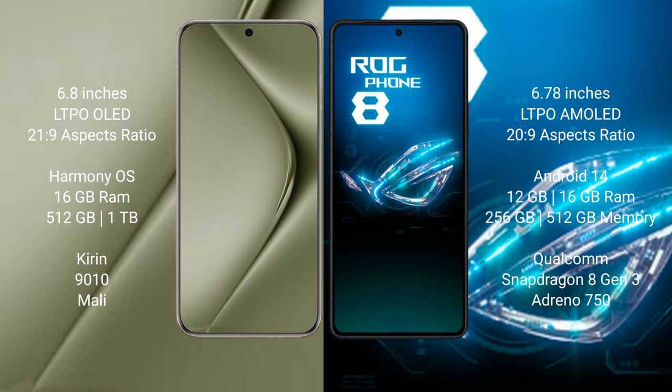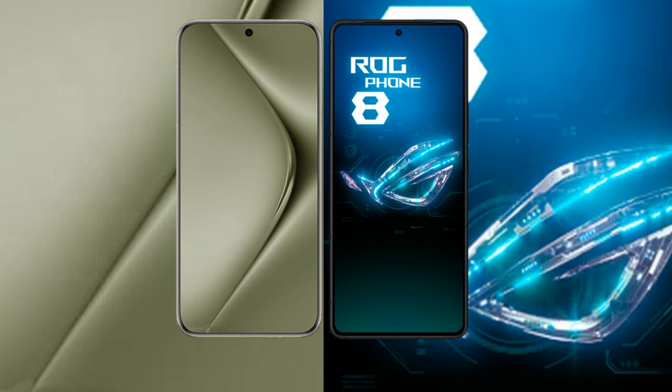Huawei Pura 70 Ultra comes with 16GB RAM and 512GB or 1TB internal storage, powered by the Kirin 9010 processor and Mali GPU. Asus ROG Phone 8 comes with 12GB or 16GB RAM and 256GB internal storage, powered by the Qualcomm Snapdragon 8 Gen 3 processor and Adreno GPU.